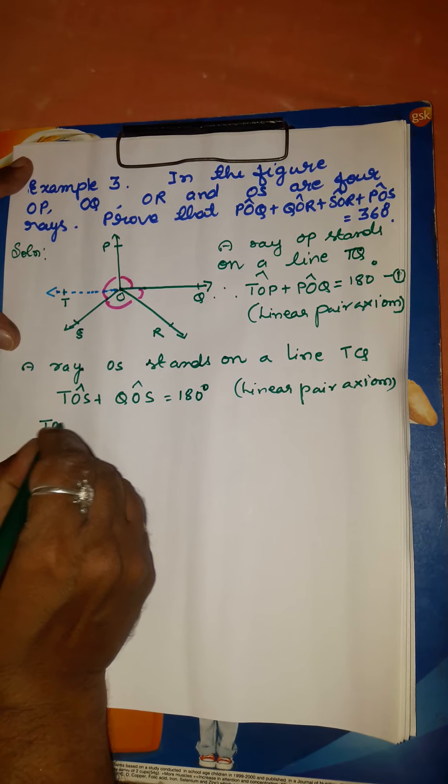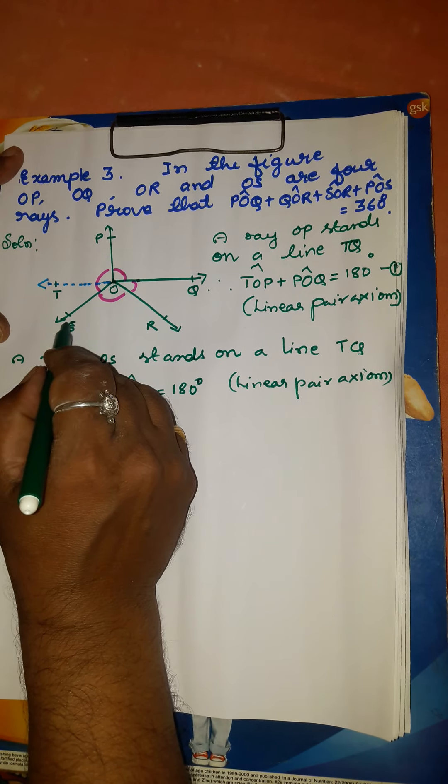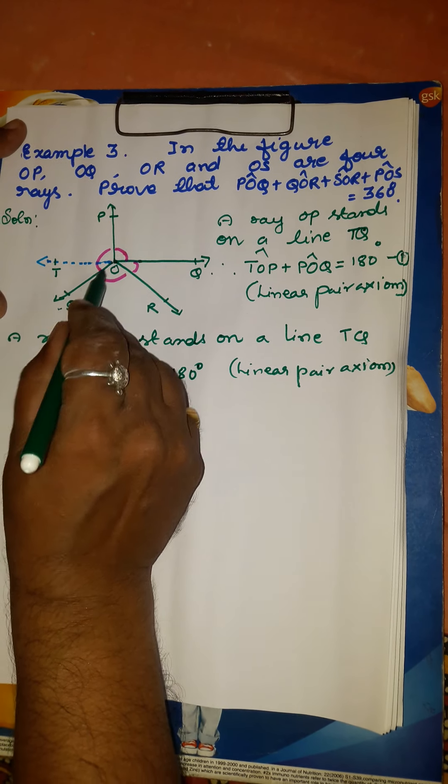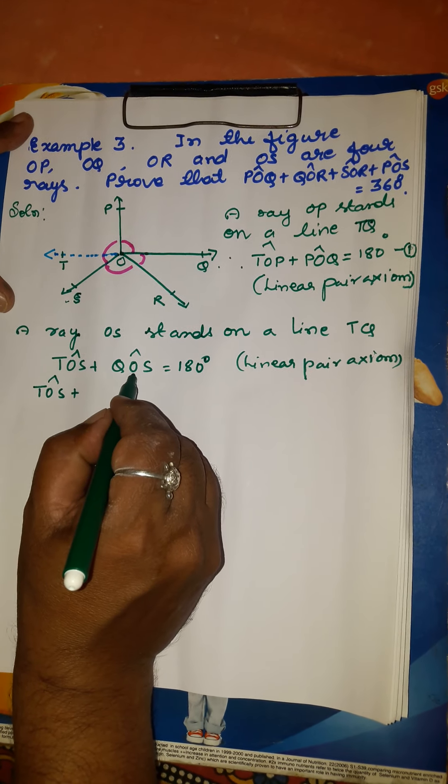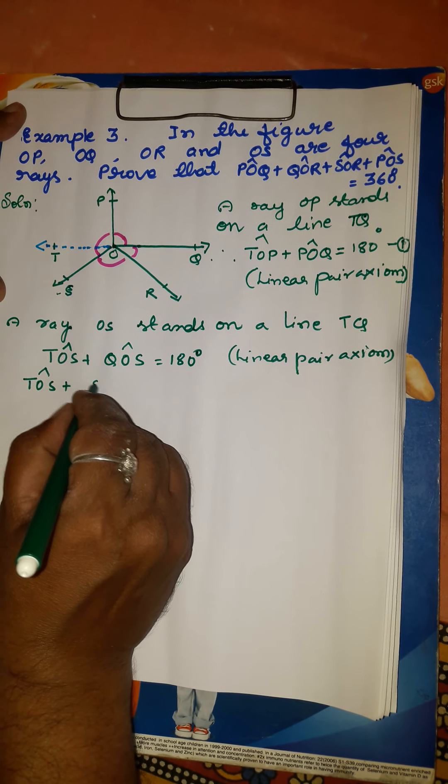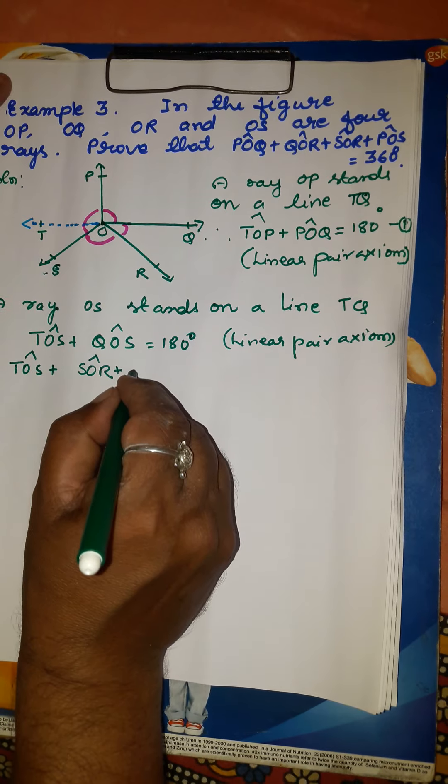Angle QOS is made up of two angles: angle SOR and angle ROQ. So in the place of QOS, I will write angle SOR plus angle ROQ equals 180 degrees. Call this equation 2.